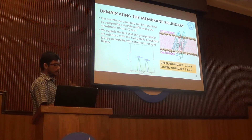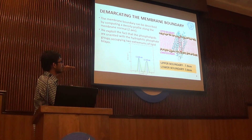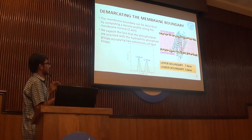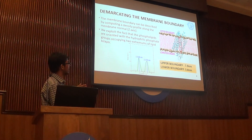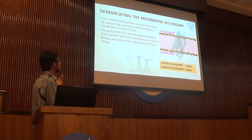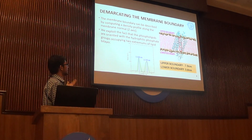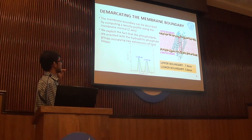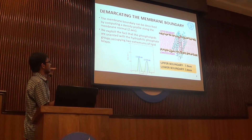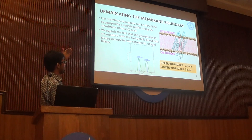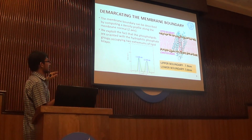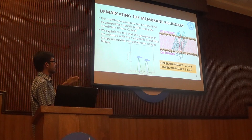We needed to study the water dynamics only inside the protein, so we first demarcated the region of interest. We took two z-values between which we did all our studies. To mark where to study the water dynamics, we plotted the density of the phosphorus atom — oriented with the hydrophilic phosphate group at the extremum of the lipid bilayer in contact with water. From the graph, we can see two extremums of density, giving us the upper boundary at 7.9 nanometers and the lower boundary at 3.8 nanometers.